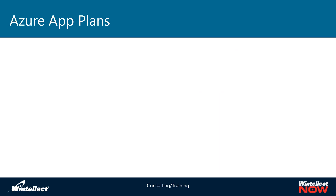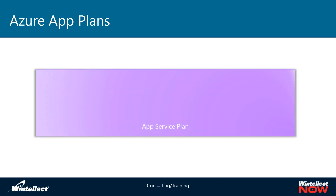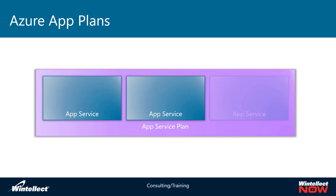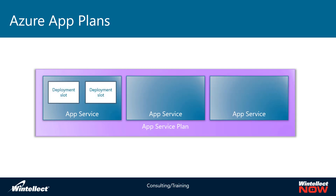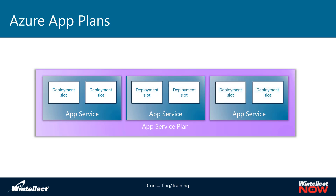We've already looked at App Service Plans on Azure and how you can create App Services within an App Service Plan. Today we're going to look at deployment slots in App Services — how you can use them for staging an application and swapping it into a production slot, and how you can use deployment slots for A/B testing two different versions of an application running side by side within the same App Service.